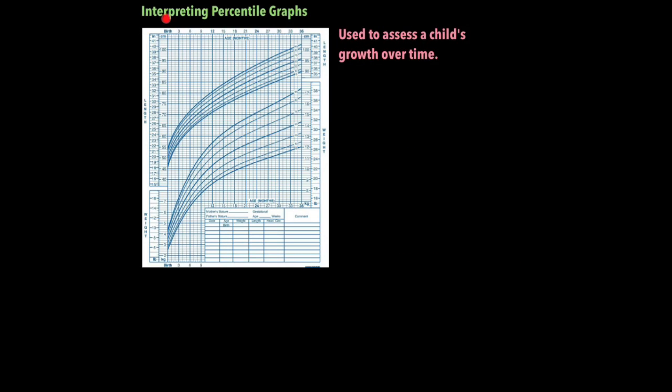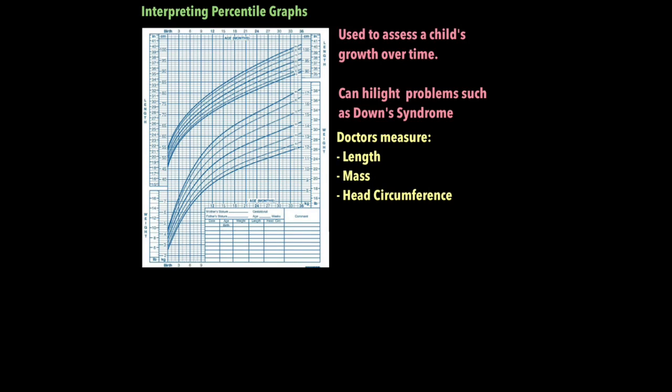Finally, let's look at how we interpret percentile graphs. These are used to assess a child's growth over time. This is important because it can highlight certain medical problems such as down syndrome or overweight or being underweight. To plot information on growth, doctors will measure the following things in a child. The length, their mass and their head circumference. This is what a normal percentile growth chart looks like but it's quite difficult to read so I'm going to show you a simplified version.